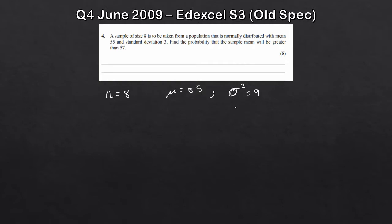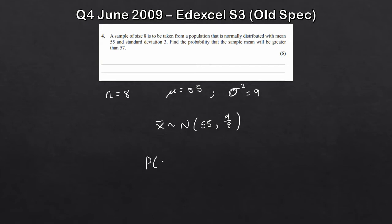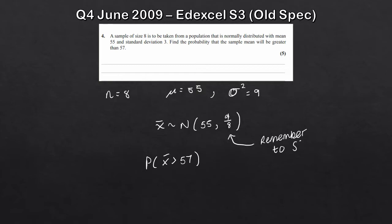We write down our approximate distribution: X̄ is approximately normally distributed with mean 55 and variance 9 over 8. We're looking for P(X̄ > 57). Using your graphical calculator — and remember to square root the variance — you get 0.0297 to three significant figures.